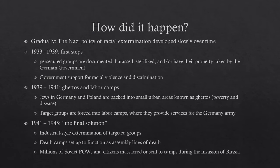The final stage of the Holocaust unfolded from 1941 to 1945 after Germany invaded Russia. The Nazis termed this the 'Final Solution' — industrial-style extermination of targeted groups. Jews, Soviet citizens, and Polish citizens were executed by the millions. Death camps were set up as death factories: people arrived by train, were sorted into those who could work and those who could not, and those who could not work were immediately executed in gas chambers using poison gas. Millions of Soviet prisoners of war and citizens were also simply massacred as the German army advanced into Russia.